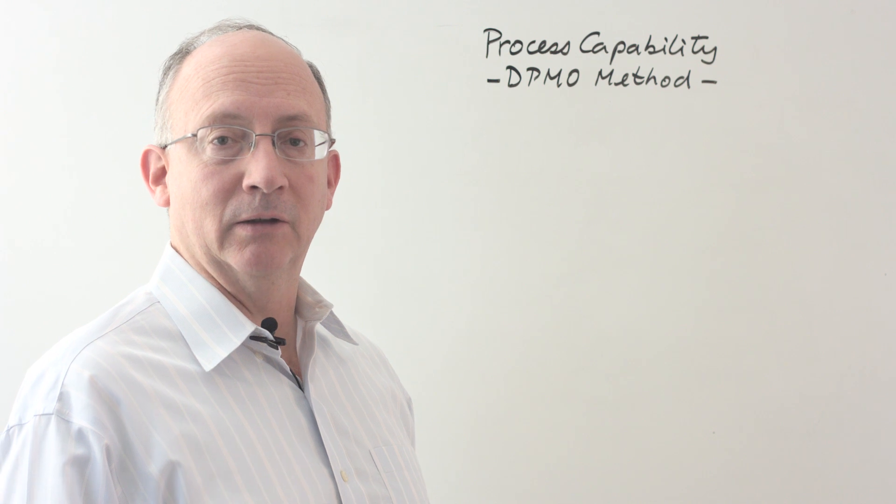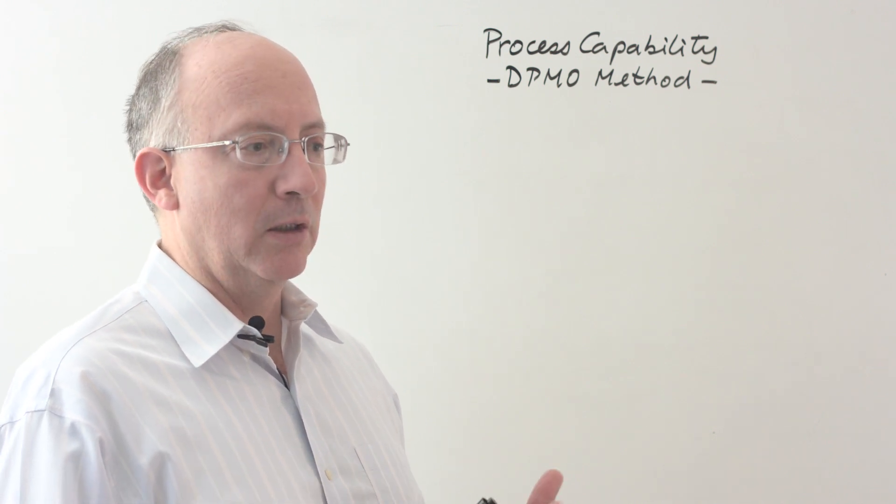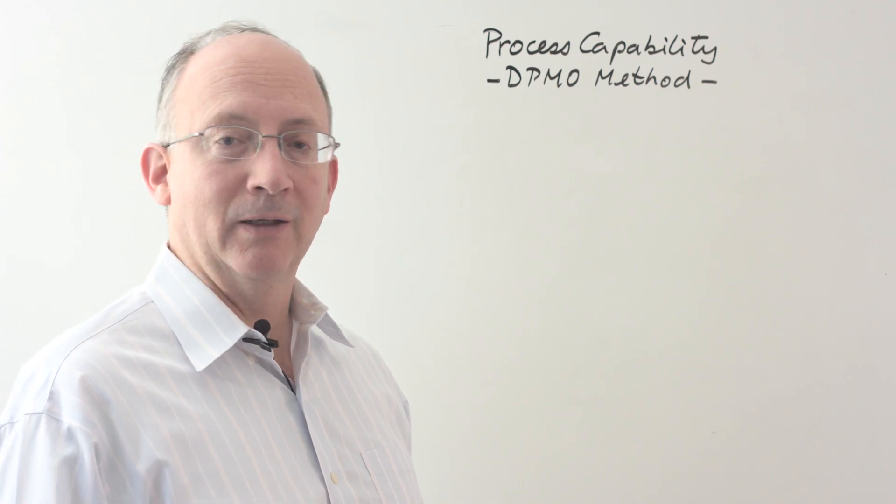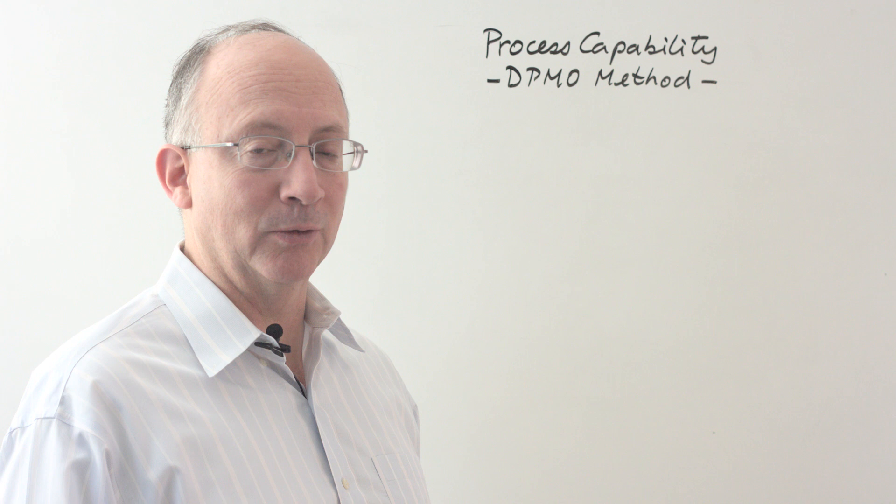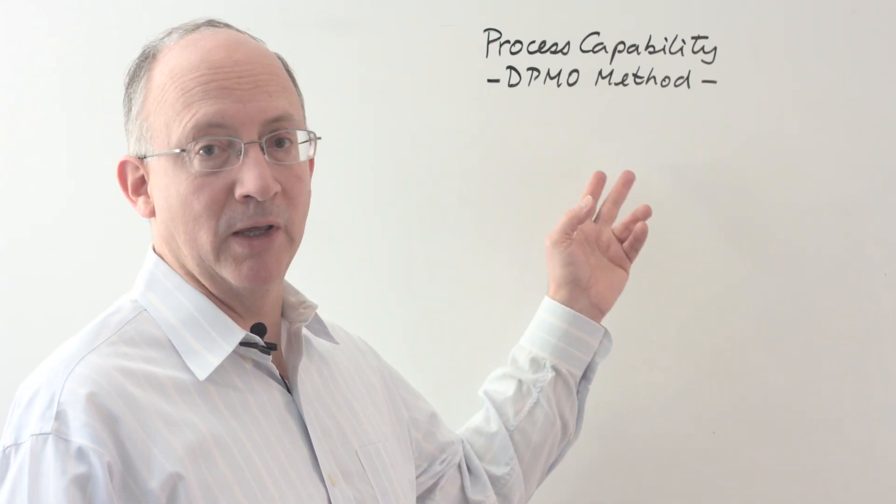In addition to that, we also have the SIGMA metric. Now, what happens when there is more than one important quality characteristic of a product or a service? In that case, the SIGMA method doesn't work and we need to apply what we're going to present today, which is the DPMO method.